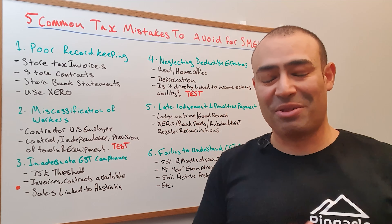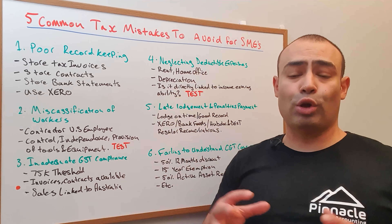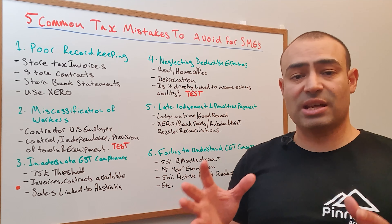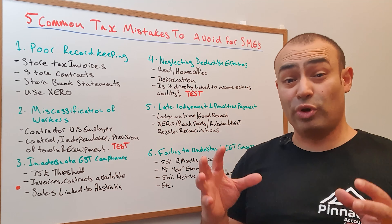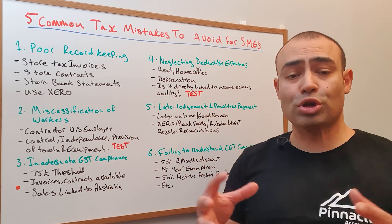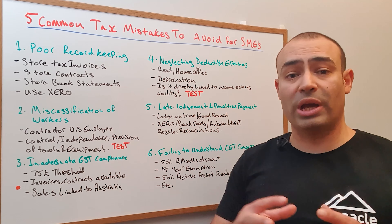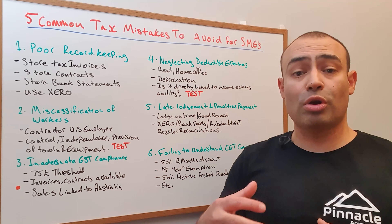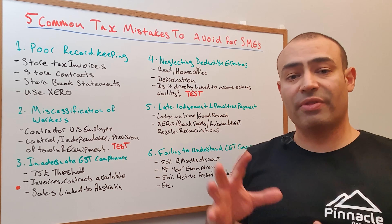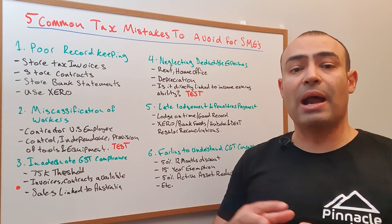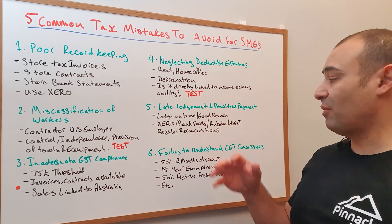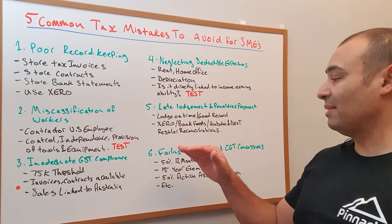Number five is late lodgment and penalty payments. We need to be lodging our BASes and our tax returns on time. If we don't do that, we incur a late penalty fee and also GIC — which is the general interest charge. We might also incur further penalties such as intentional disregard of the law, but that can be discussed in another video.